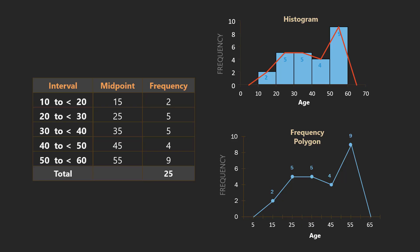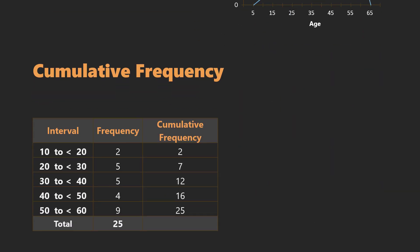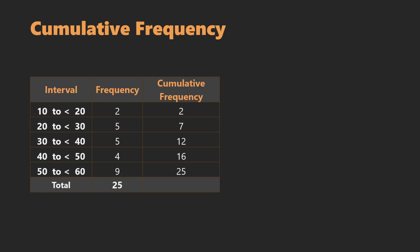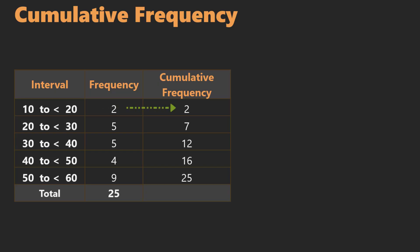Another way to extract useful information from data is by using cumulative frequencies. A cumulative frequency represents the sum of all frequencies up to the class interval in question. Note that the upper limits are not included in their respective class intervals, so cumulative frequencies tell us how many values are below the upper limit of a class. To calculate them, we start with the frequency of the first class, then add each subsequent class frequency. The cumulative frequency of the last class will always equal the total frequency.